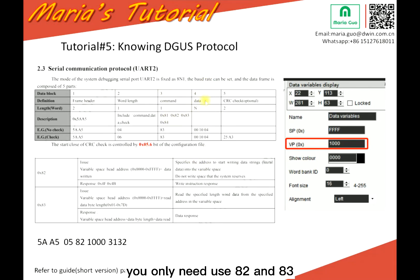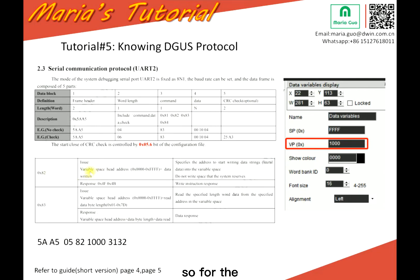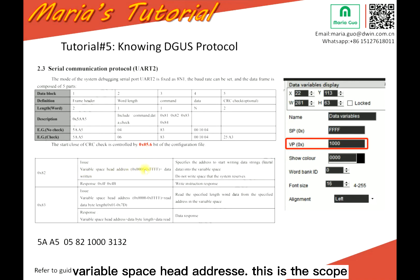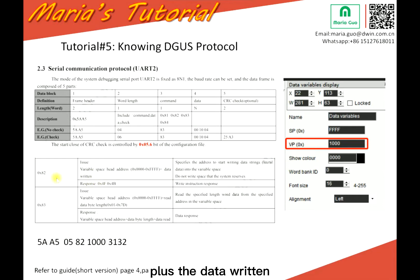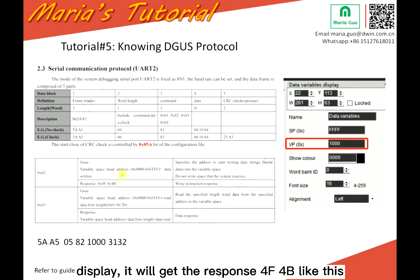You only need to use command 0x82 and 0x83. And then is your data, followed by the CRC check option. For 0x82, this is to write to a variable space head address — this is the scope plus the data written. When you send this to the display, it will get the response 0xFA or 0xFB like this.